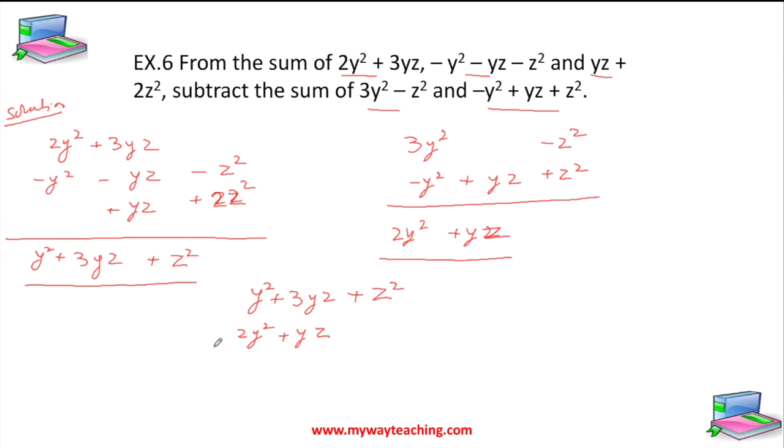And now because we are subtracting, change the sign. It becomes -2y² - yz. So it comes: -y² + 2yz + z².